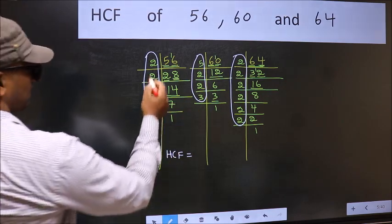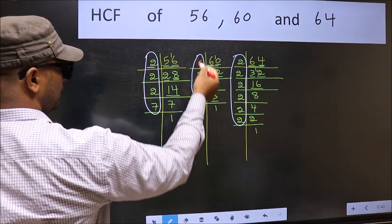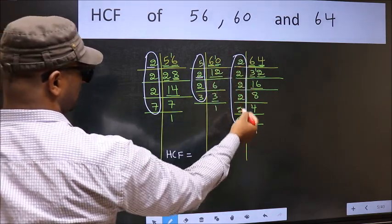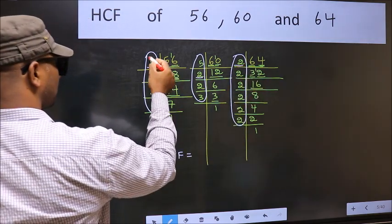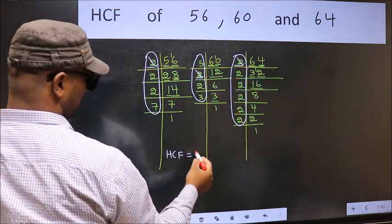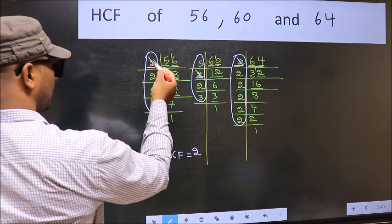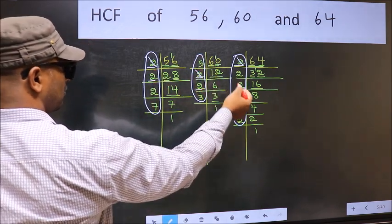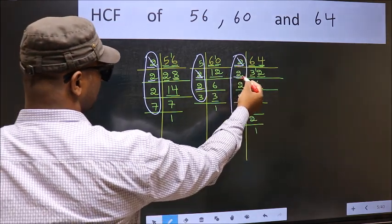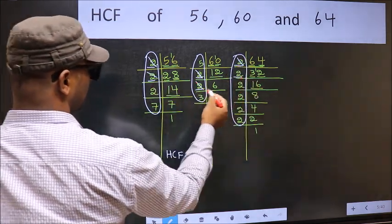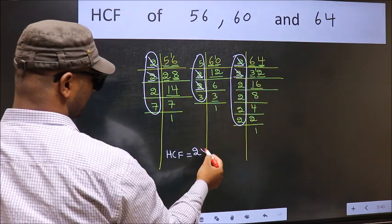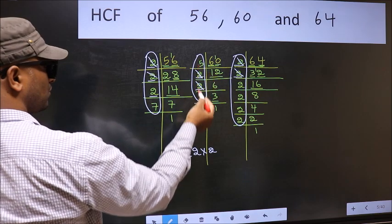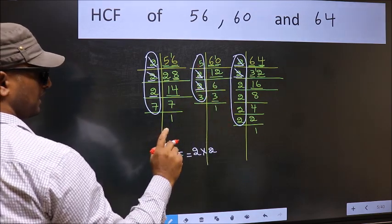So now let us find the numbers which are present in these 3 places. Starting with the number 2. Do we have 2 here? Yes. Go to the next place. Do we have 2 here? Yes. So cut 2 right here. Next number 2. Do we have 2 here? Yes. Go to the next place. Do we have 2 here? No. So no need to check in the other place.